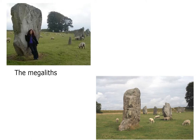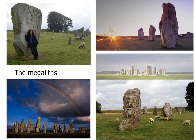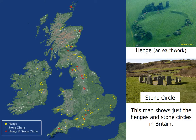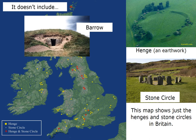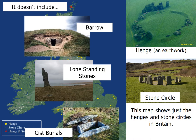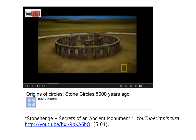Megaliths and other architecture: the megaliths were large standing stones erected by Neolithic peoples. We don't know exactly why they did this — whether it was to mark their territory or if it was part of some religious ceremony. This map on the left shows just the henges and stone circles in Britain. As you can see in the upper right, a henge is an earthwork, and a stone circle is a circle of stone. In addition, there are also barrows, lone standing stones, and cist burials — a kind of crypt in the ground.